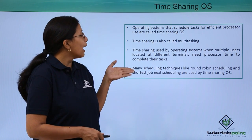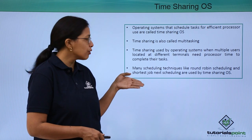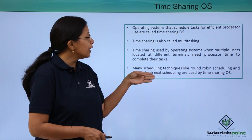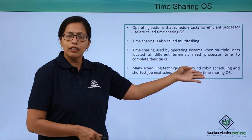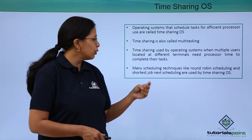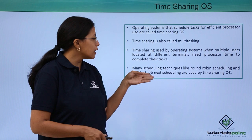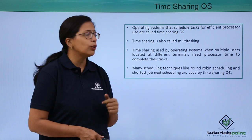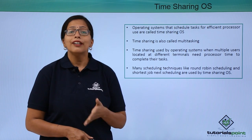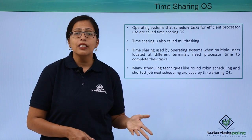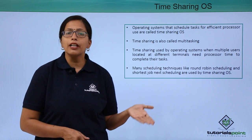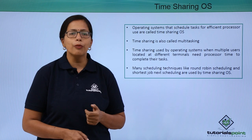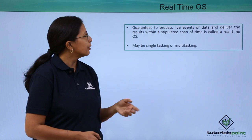As we have discussed in our previous videos, many scheduling techniques are used by the time-sharing operating system — such as round robin scheduling, shortest job next scheduling, or deadline next scheduling.